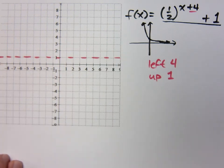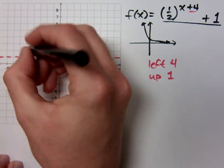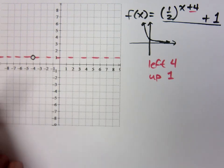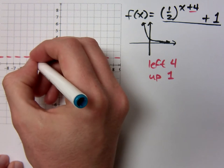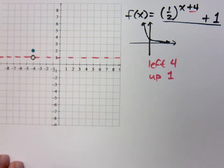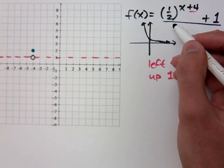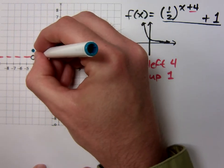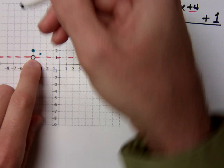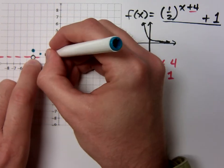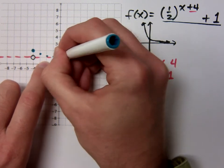What is the coordinate of your new origin, so to speak? Negative 4, 1. So from here, I know that my base point is 0, 1 from this shifted origin — it's up 1 right here. Look at your base: it's 1 half, which means as I go out to the right, I'm going to be getting smaller and smaller. If I go out one step, I get half of my distance from the horizontal asymptote that I had to the base point. If I go out another step, I get 1 fourth, and 1 eighth, and so on.